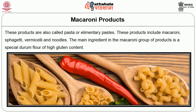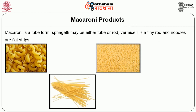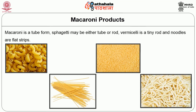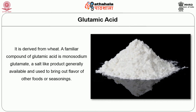Macaroni products, also called pasta or alimentary paste, include macaroni, spaghetti, vermicelli and noodles. The main ingredient in the macaroni group of products is a special durum flour of high gluten content. Macaroni is a tube form; spaghetti may be either tube or rod; vermicelli is a tiny rod and noodles are flat strips. Pasta products are also available in the shapes of shells and alphabets. Glutamic acid is derived from wheat; a familiar compound is monosodium glutamate, a salt-like product generally available and used to bring out the flavor of other foods or seasonings.